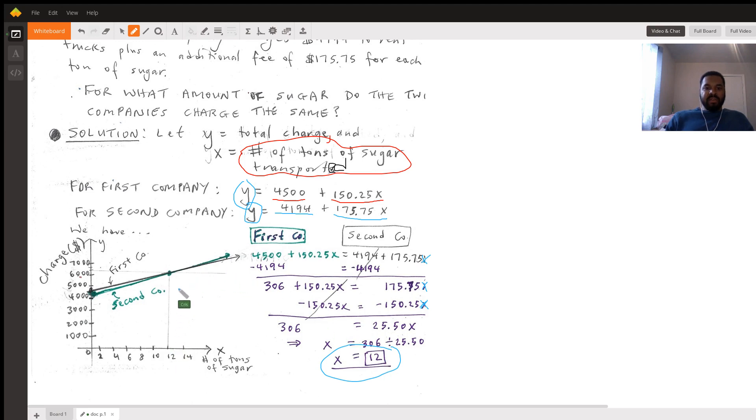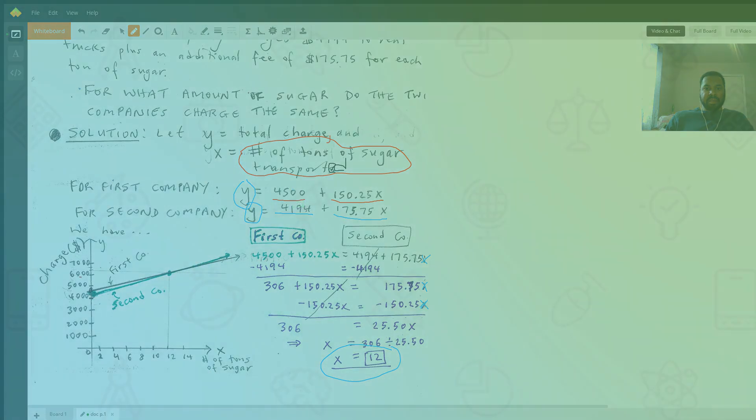You can see this in a graph. If you make a simple graph, you can see that when x equals 12, the cost would be the same, which is slightly over $6,000.